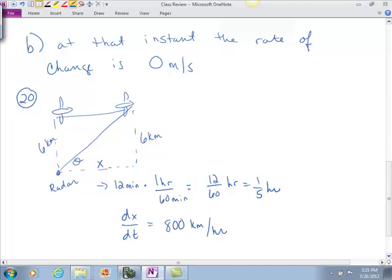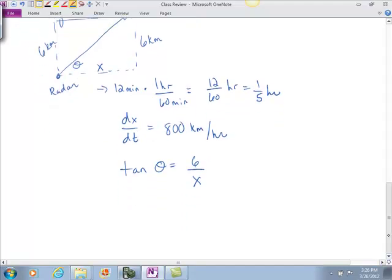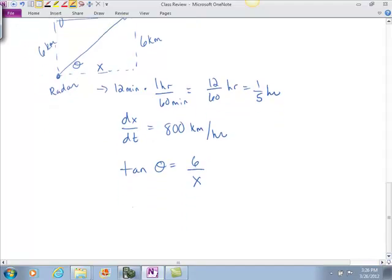Does anybody have a relationship, any angle, something dealing with maybe x and the 6 and the theta? So we could say that the tangent of theta is equal to the opposite over the adjacent, so 6 over x. What's the derivative of tangent? So this is secant squared theta dθ/dt is equal to the derivative of 6 over x is going to be negative 6 over x squared times dx/dt, because you think of that as x to the negative 1, so the negative 1 comes in.